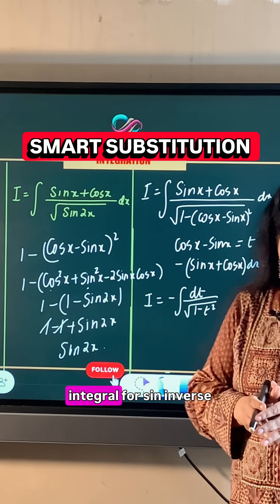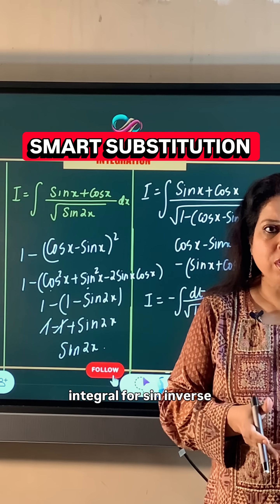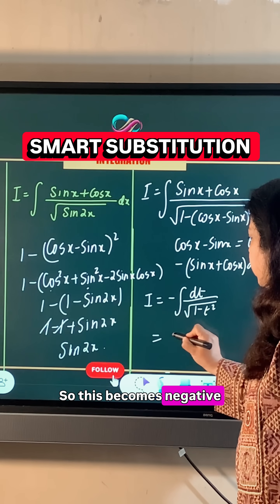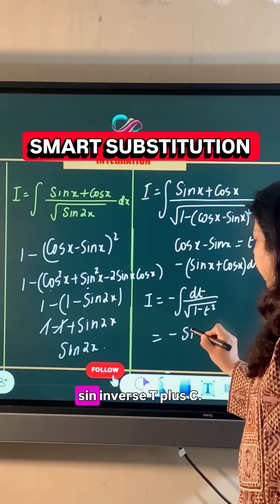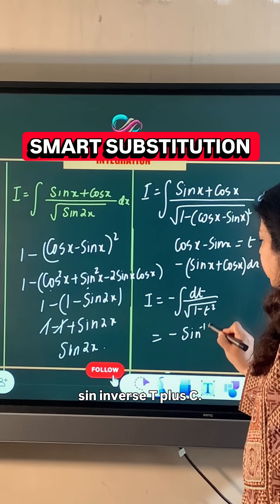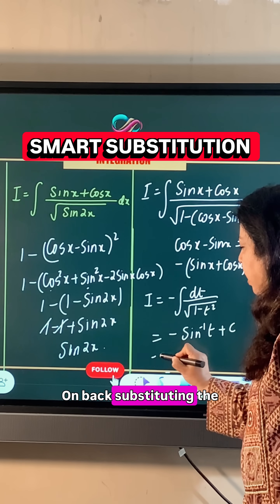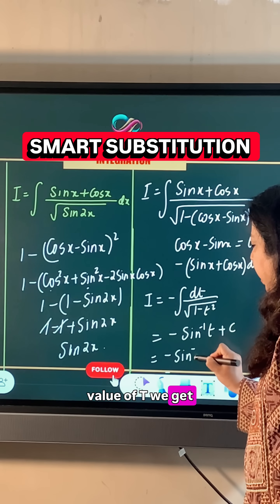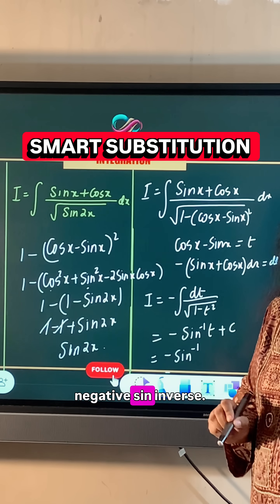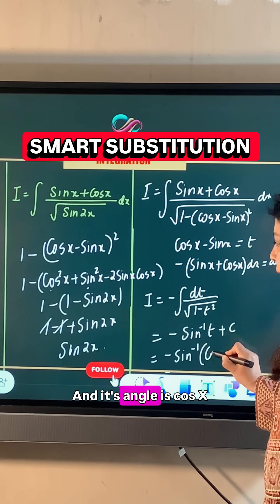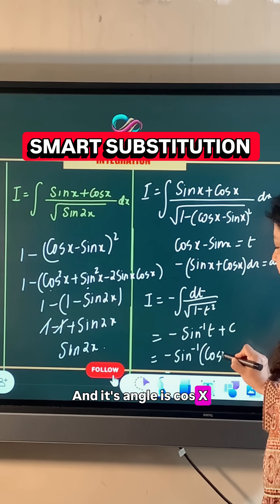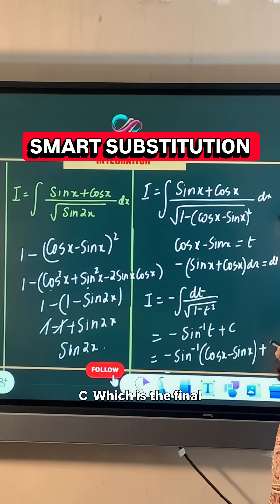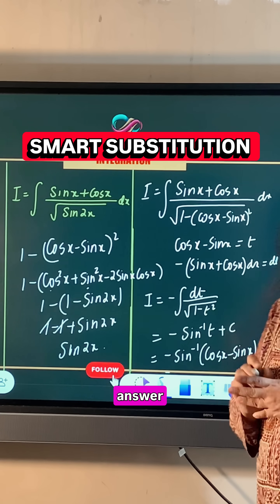Now this is a standard integral for sin inverse t. So this becomes negative sin inverse t plus c. On back substituting the value of t, we get negative sin inverse of cos x minus sin x plus c, which is the final answer.